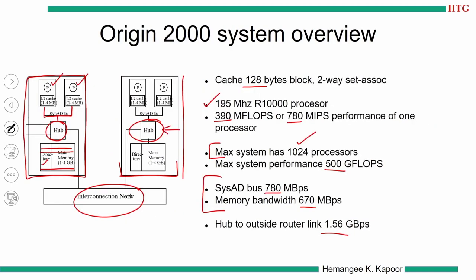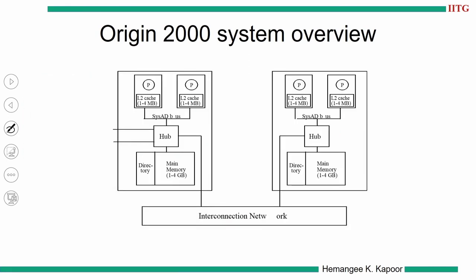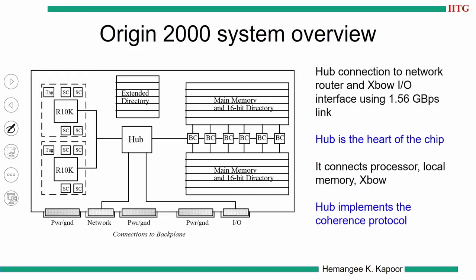The hub must see all cache misses coming from the processor node, be able to read and write to memory, retrieve data from caches, and send and receive messages to the interconnect. Looking at the zoomed-out picture of one processing node in more detail: the hub is connected to main memory and to several IO peripherals including the network and IO ports. The hub is called the heart of the chip because it handles all coherence. It connects one node to other nodes through the XBO switch. One hub goes out, connects to the XBO switch, and from there connects to other nodes; the hub implements the coherence protocol.